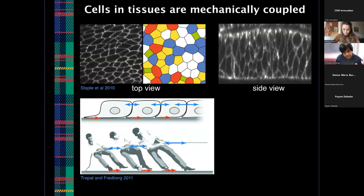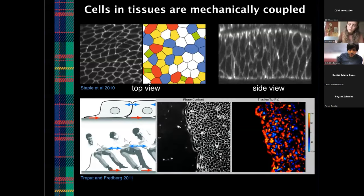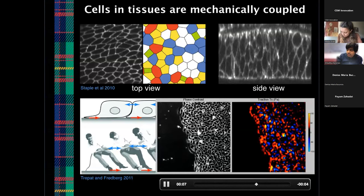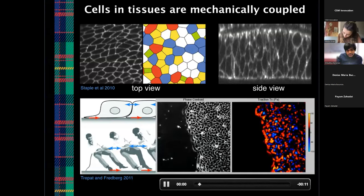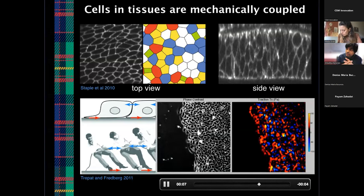The other thing is that cells in a tissue are very mechanically coupled to each other — they stick to each other, they talk to each other, they generate forces on one another. Cells in a tissue are always in a tug of war, pushing on each other and also pushing on the environment they're living in. One can actually measure these forces, which helps us build models. What you see here is a movie where the colors show the forces that cells generate — using advanced imaging and microscopy techniques, we can actually measure those forces.